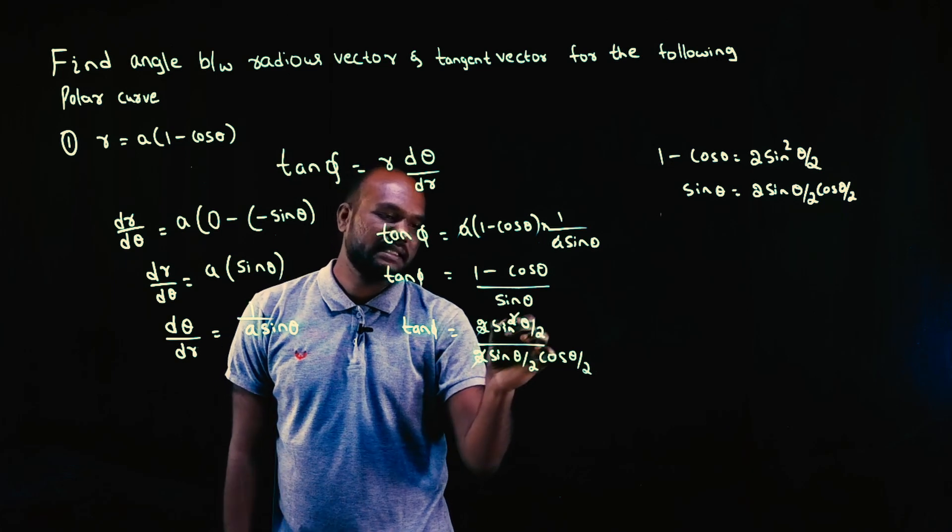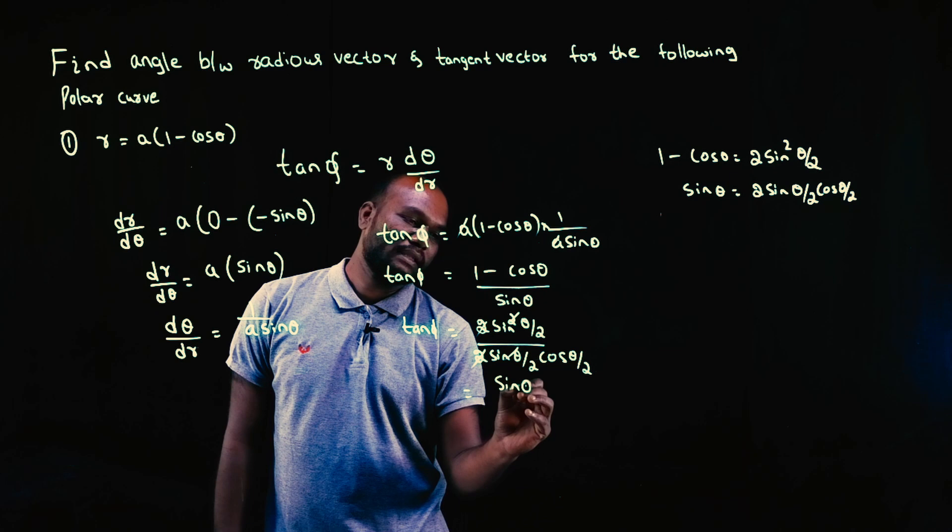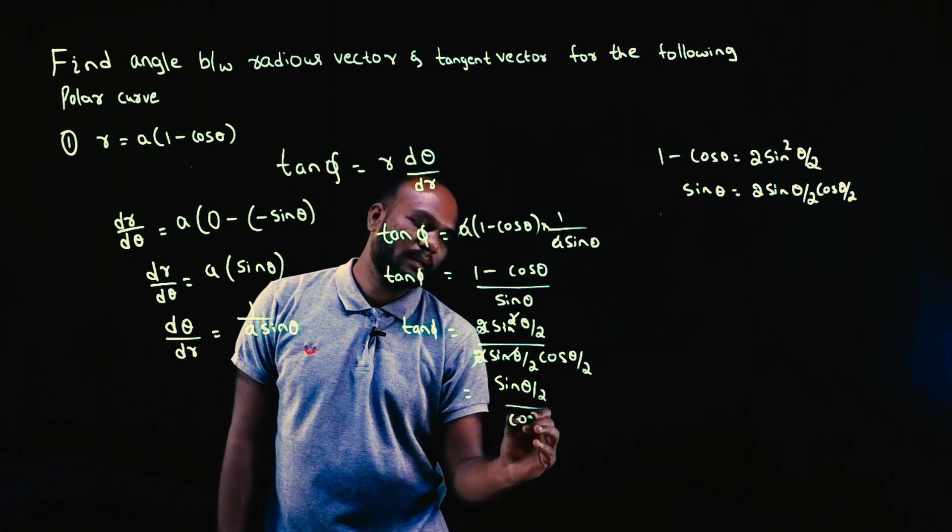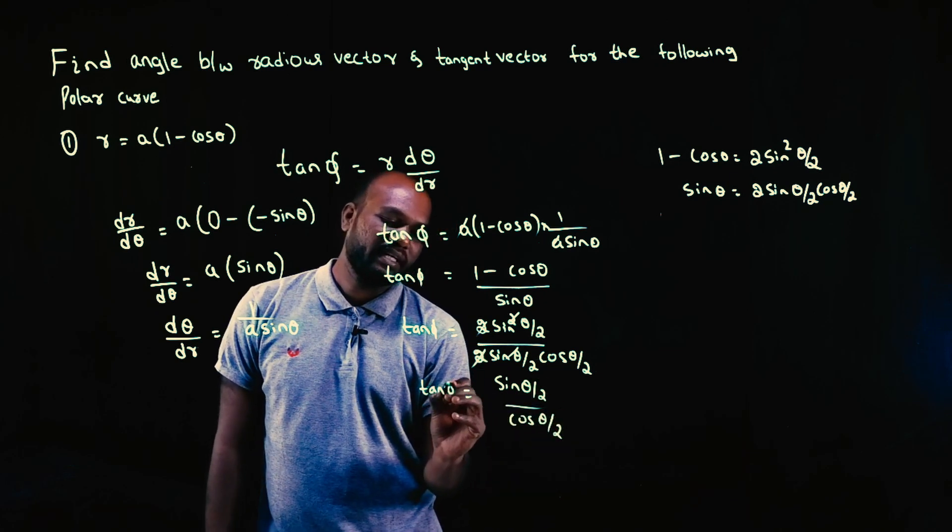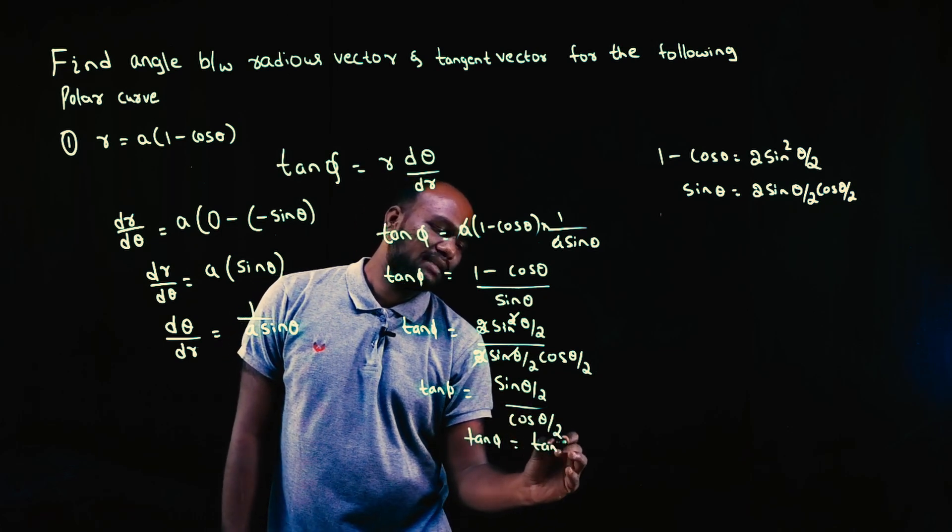So this 2, this 2 get cancelled. This sin, 1 sin and 1 sin get cancelled. sin θ/2 upon cos θ/2 is what is left. This is the value of tan φ. So tan φ is what? sin by cos is what? tan θ/2.